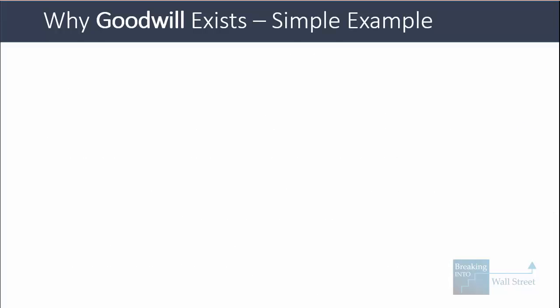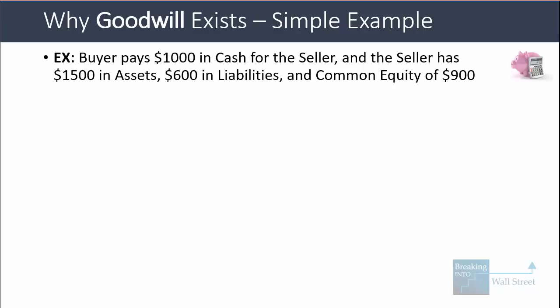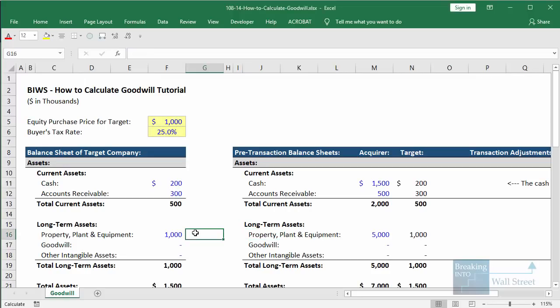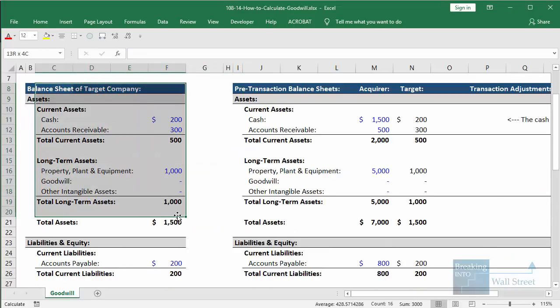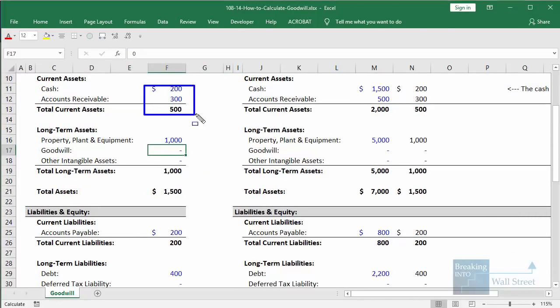The basic calculation: goodwill equals the equity purchase price minus the seller's common shareholders' equity, plus the seller's existing goodwill (which goes away), and then you add or subtract other adjustments. Let's go through a simple example in Excel. We'll say a buyer pays $1,000 in cash for the seller, and the seller has $1,500 in assets, $600 in liabilities, and common shareholders' equity of $900. The target has cash of $1,200, accounts receivable of $300, PP&E of $1,000, so total assets equals $1,500.